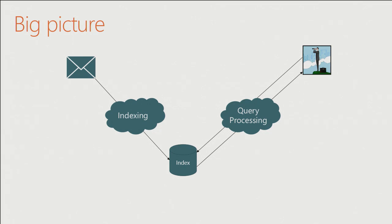At a high level, search is pretty simple. You get messages and other types of items — calendar and so on — they get indexed and stuck into the index. When an end user queries for them, we retrieve the items and give them back. Of course, it's not always that simple, and if you dig a little deeper, it gets more complicated.